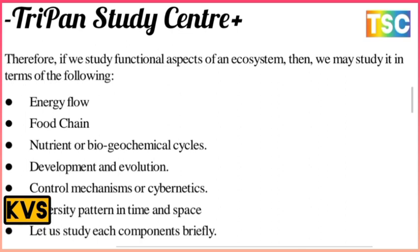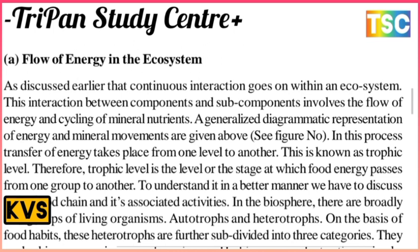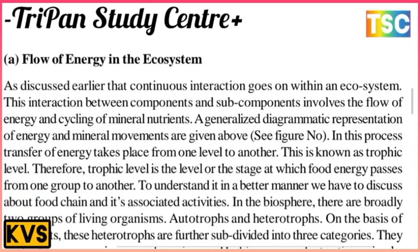Now let us discuss the flow of energy in the ecosystem. There is a continuous interaction within our ecosystem, and this interaction between components and sub-components involves the flow of energy and the cycling of mineral nutrients. In this process, the transfer of energy takes place from one level to another, and this is called the trophic level.